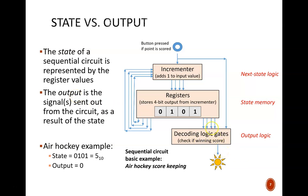So in this example, the state of the machine is 0101, which we interpret as decimal five. But the output of the machine is zero, which we interpret as don't turn on the flashing lights yet because the game isn't over.